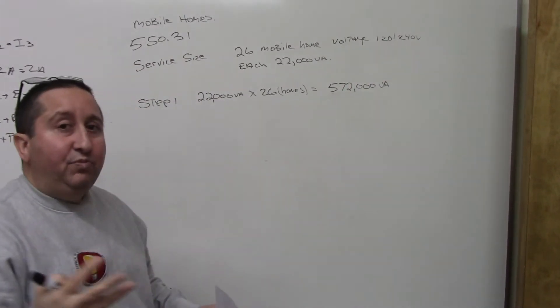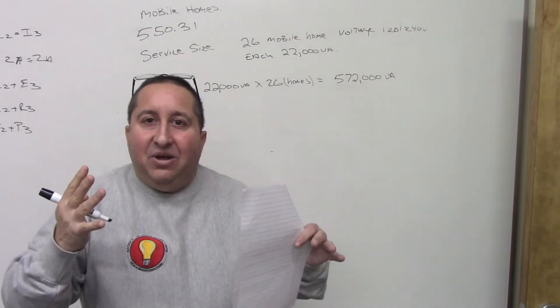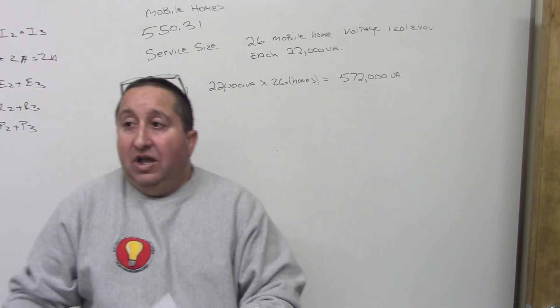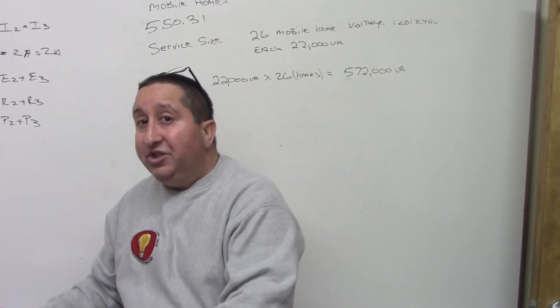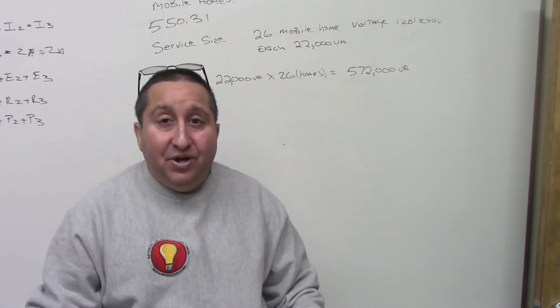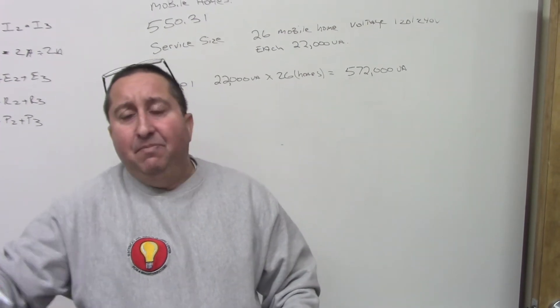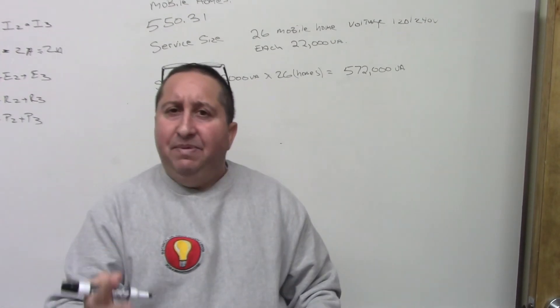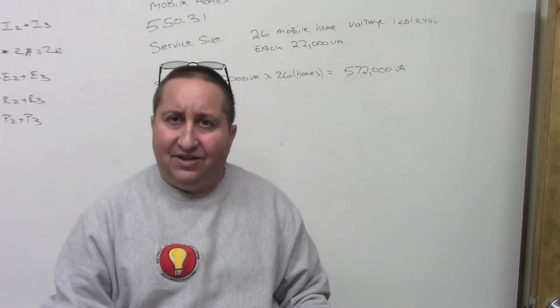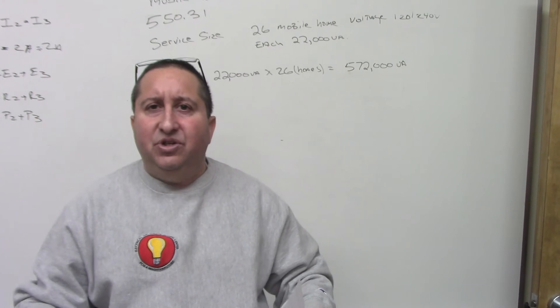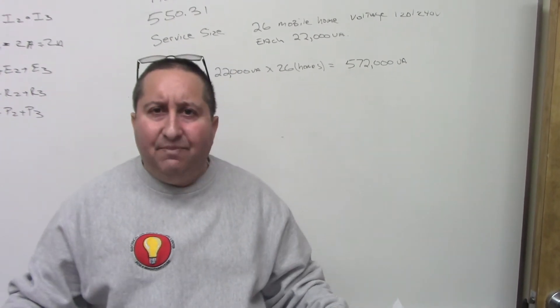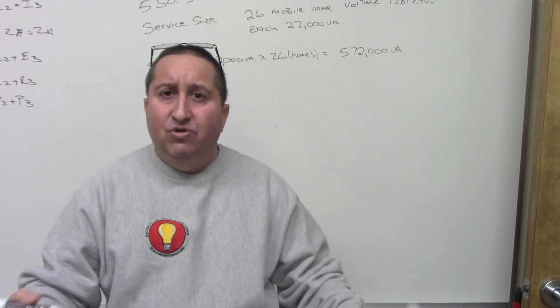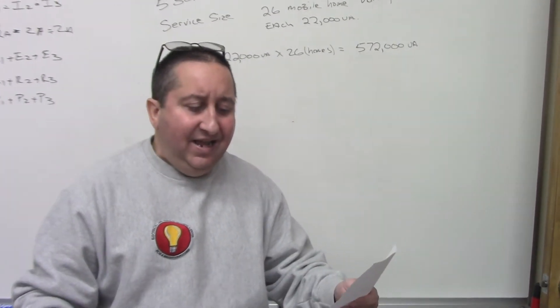Now, I got a stupid question. Is everything going to be on at the same time for these 26 units? That means, is everybody going to be doing the wash at the same time? Are people going to put the lights on at the same time? No, people might go on vacation. Some people might work during the day. So you're going to have a demand factor, because not all 26 units are going to be using 22,000 volt amps at the same time.